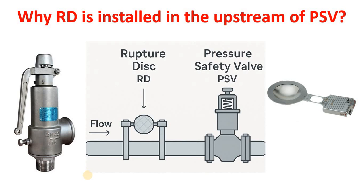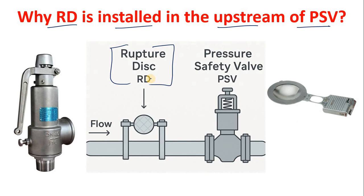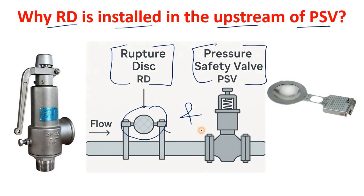In today's video we are going to discuss why a rupture disk is installed in the upstream of a pressure safety valve. You will see in industry that in any pipeline there may be only a rupture disk used, only a PSV used, or both used in combination. We will discuss the reasons when a rupture disk is used upstream of the PSV.